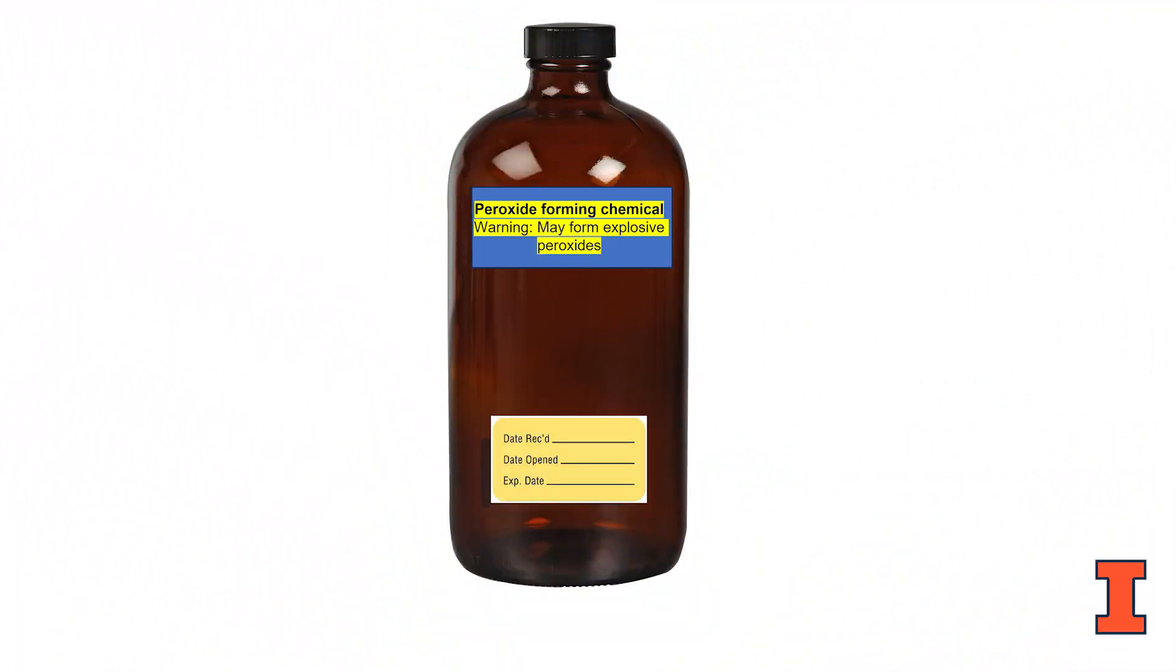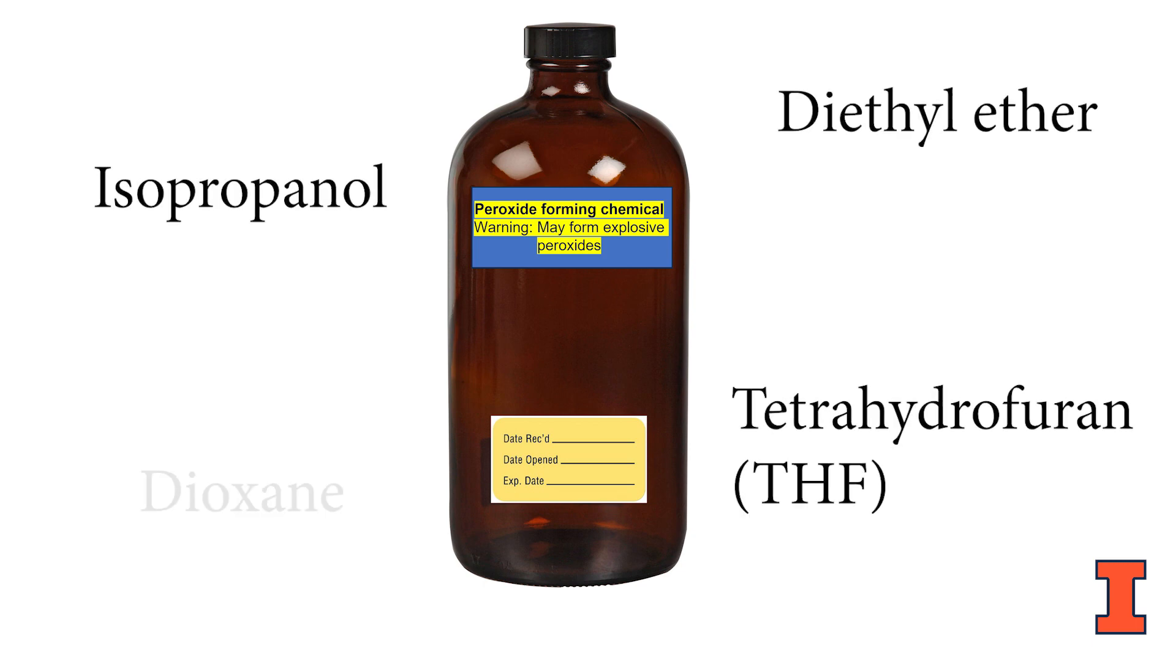Most common peroxide forming chemicals found on campus are isopropanol, diethyl ether, tetrahydrofuran and dioxanes, all of which are required to be tested for the levels of peroxides annually.